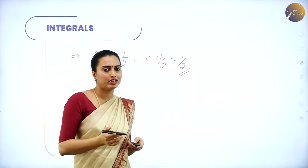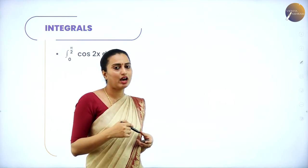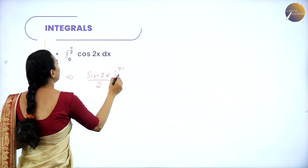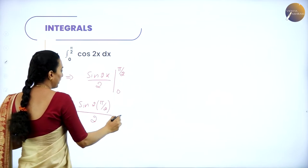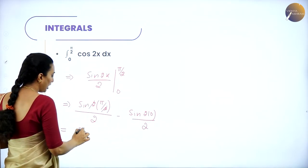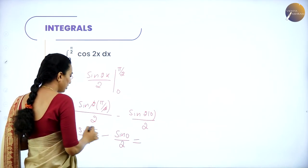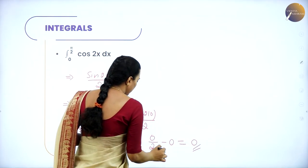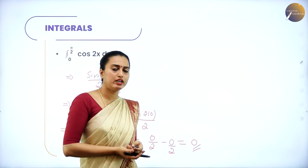The next problem is: integral from 0 to π/2 of cos2x dx. The integral of cos2x is sin2x/2. Applying the upper limit: sin(2·π/2)/2 = sin(π)/2. Applying the lower limit: sin(0)/2. Since sin 180° = 0 and sin 0° = 0, the result is 0/2 - 0/2 = 0. The final answer is 0.